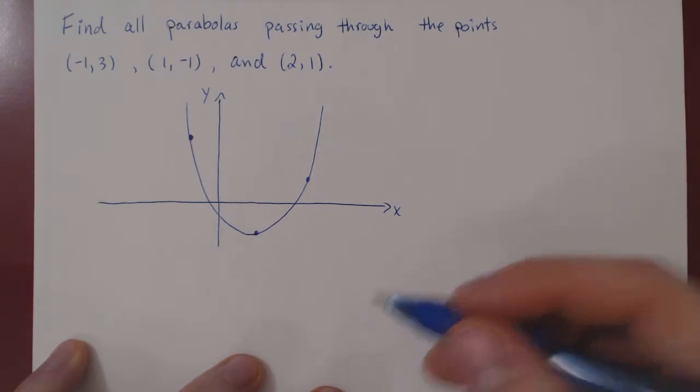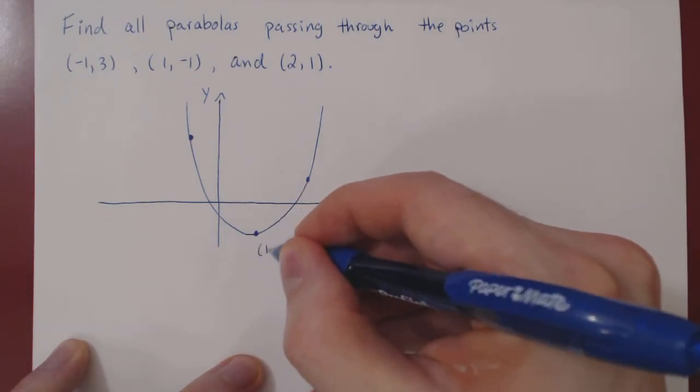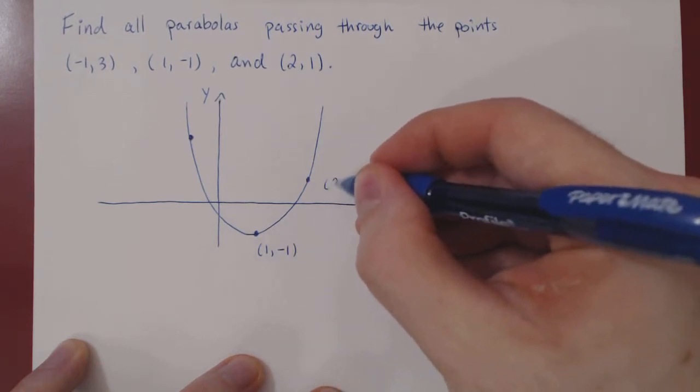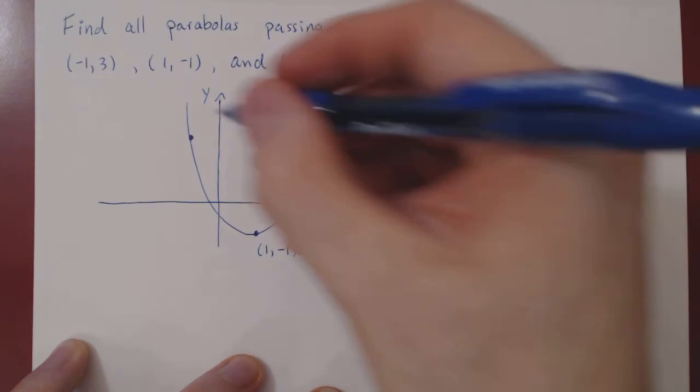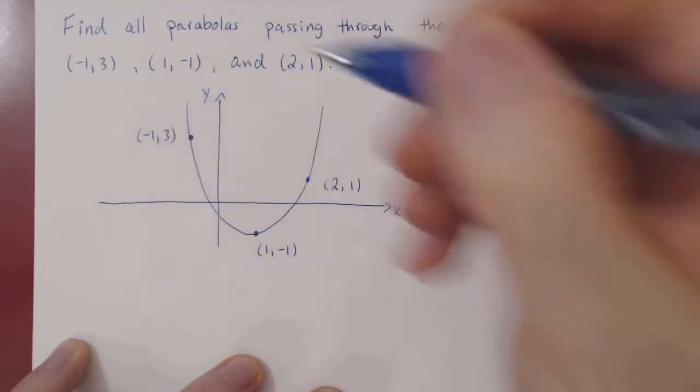but we'll find out as we go along. So what are the points? Let's write them explicitly. This one was the point x equals one, y equals negative one. This point was the point x equals two, y equals one. And this one was the point x equals negative one, y equals positive three.